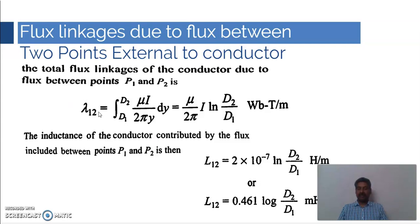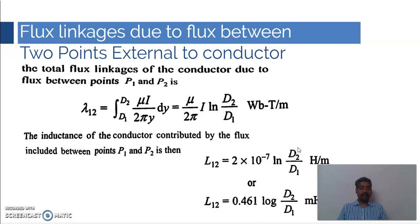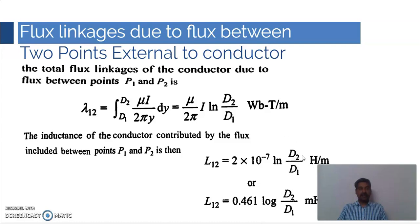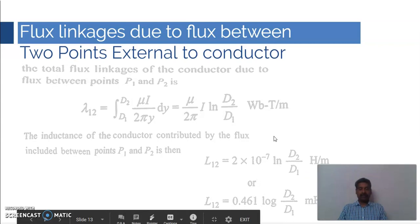Dividing the flux linkage by the current I gives the inductance. Substituting the value of μ and simplifying, the inductance contributed by flux between points P1 and P2 is L₁₂ = 2 × 10⁻⁷ × ln(D2/D1) Henry per meter. Converting to base-10 logarithm, this can be rewritten as L₁₂ = 0.461 × log(D2/D1) milli-Henry per kilometer. Note: natural log gives Henry per meter, while log base-10 gives milli-Henry per kilometer.